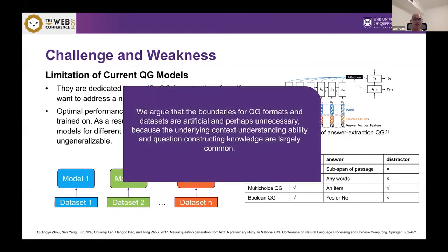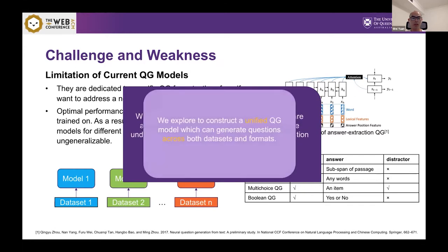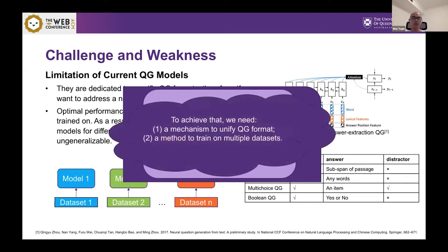However, we argue that the boundaries for QG formats and the datasets are artificial and perhaps unnecessary because the underlying context understanding ability and the question constructing knowledge are largely common. So here we decide to explore to construct a unified QG which can generate questions across both datasets and formats. To achieve this goal, we have to do two things.